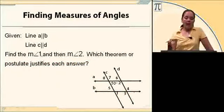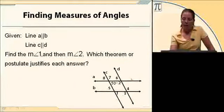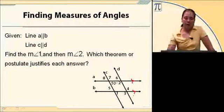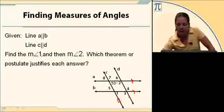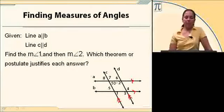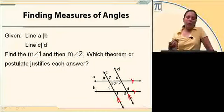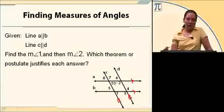Alright, we've got line A parallel to line B, and line C parallel to line D. Find the measure of angle 1 and then the measure of angle 2. And we need to tell which theorem or postulate justifies that as our answer.